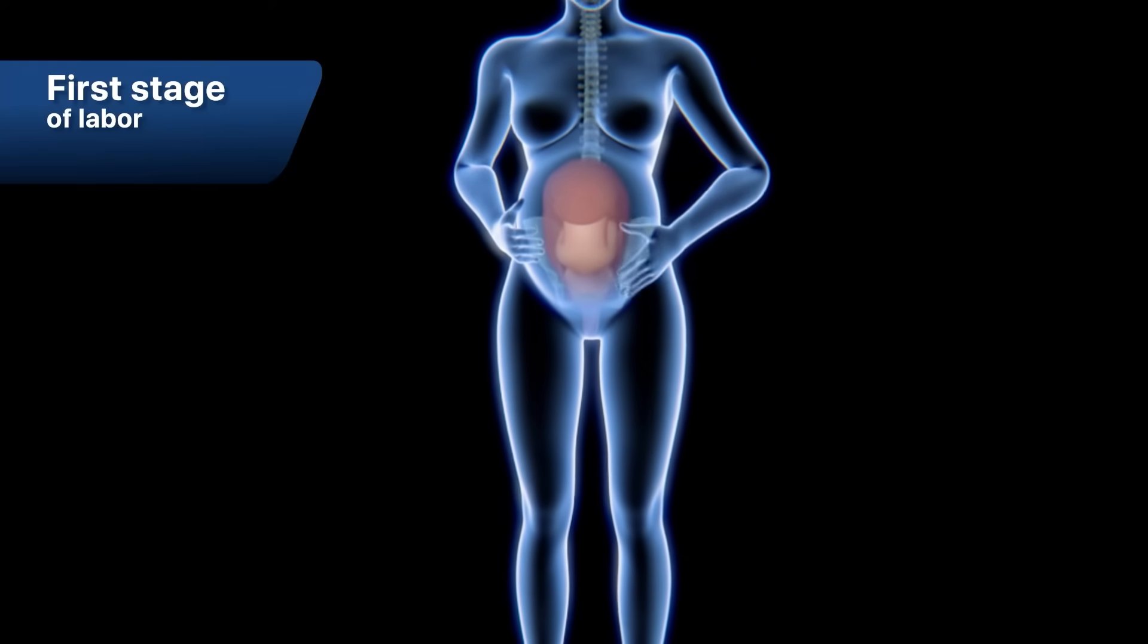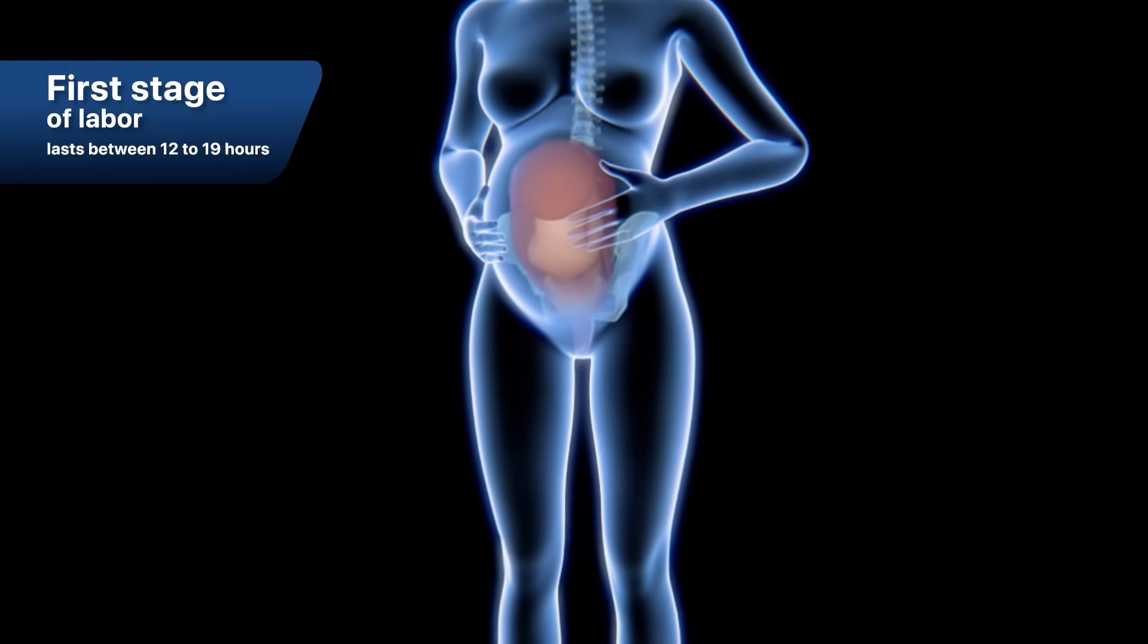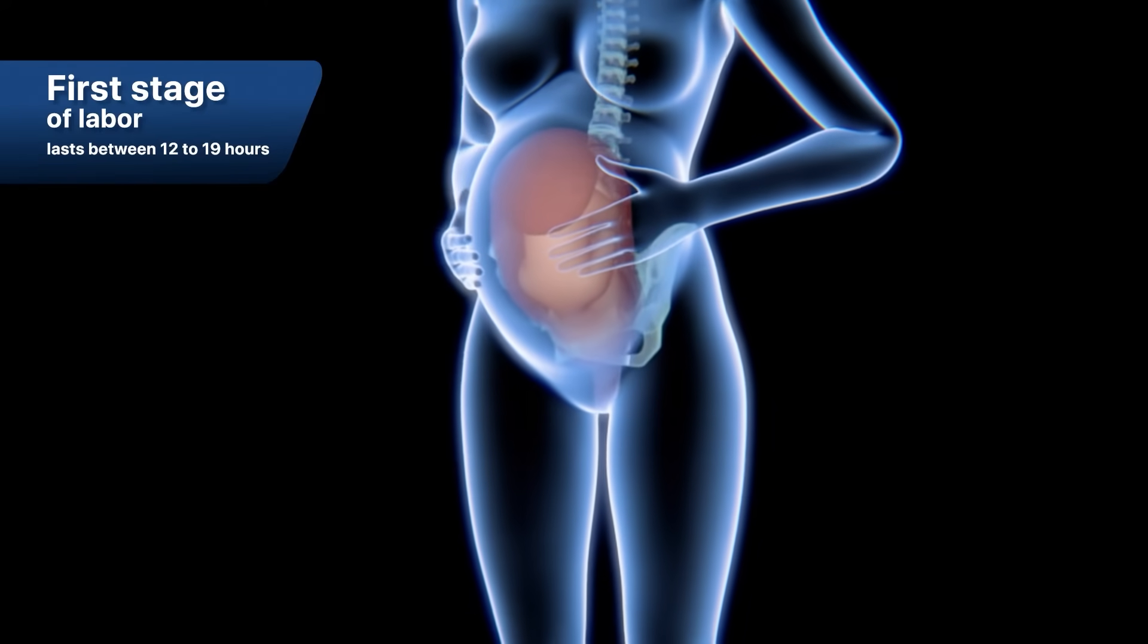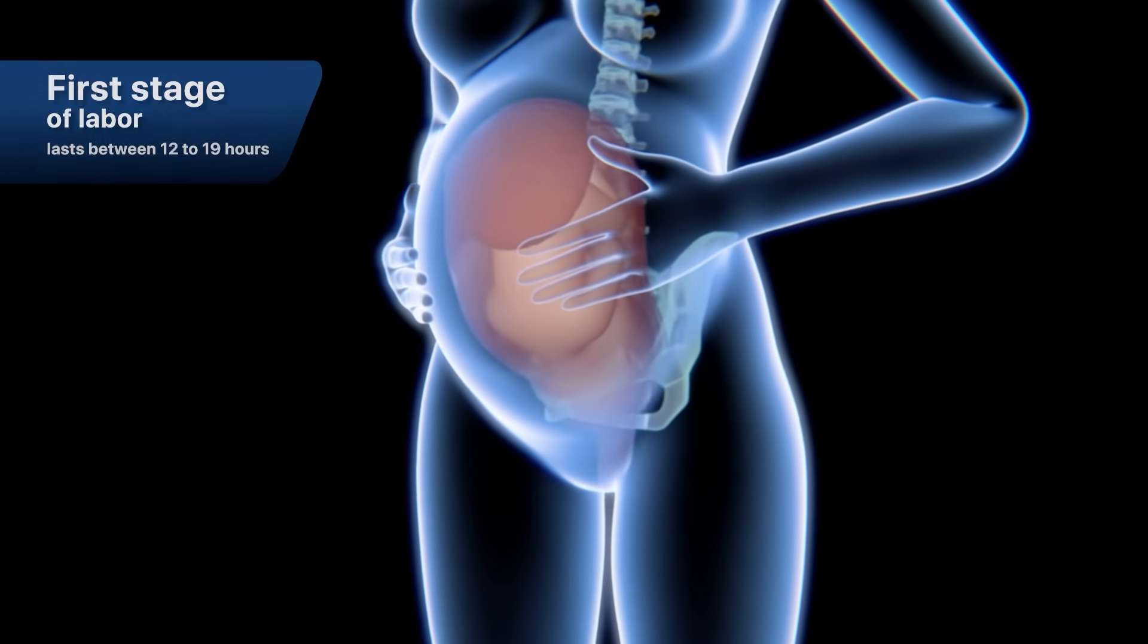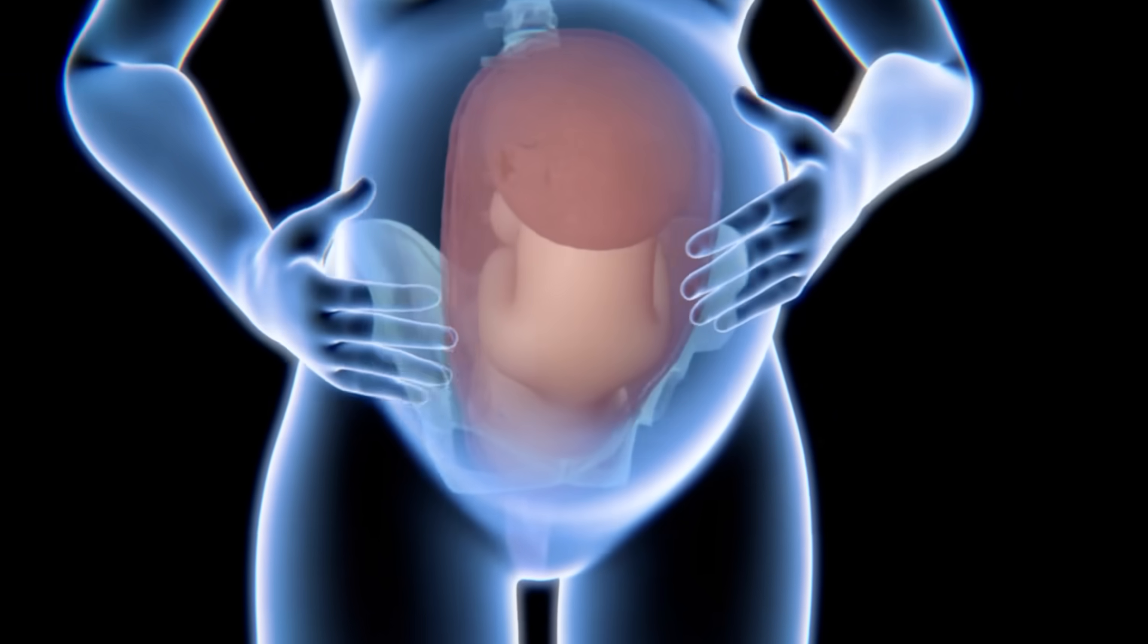During a vaginal birth, the first stage of labor lasts between 12 to 19 hours and begins when the baby moves into the pelvis and is positioned there.